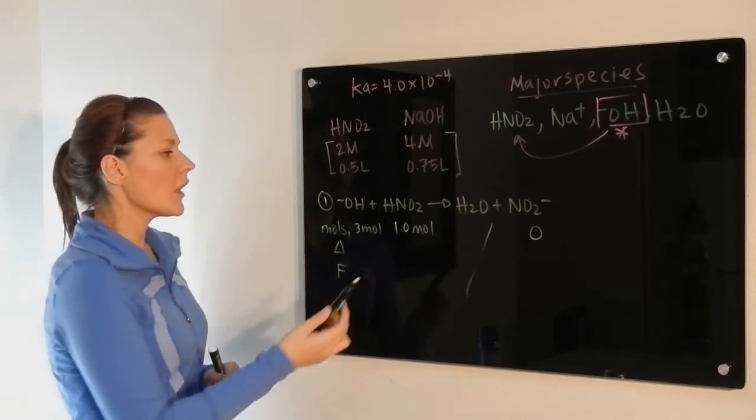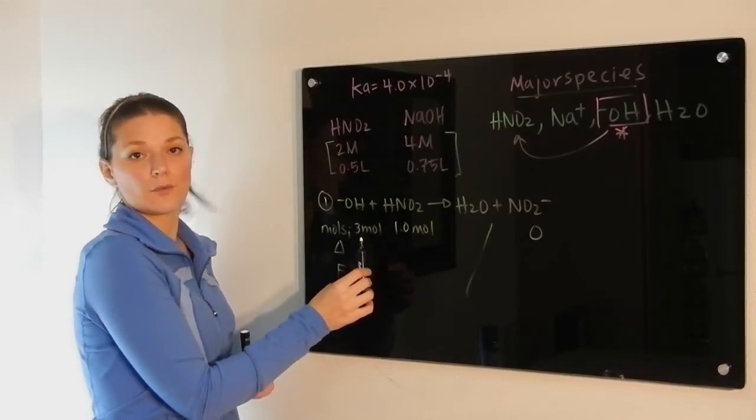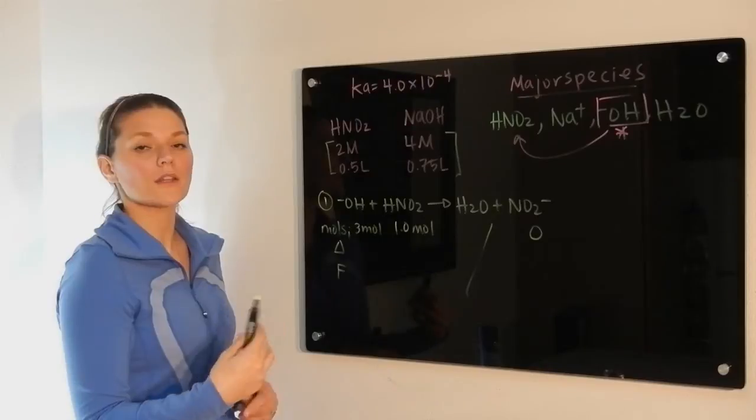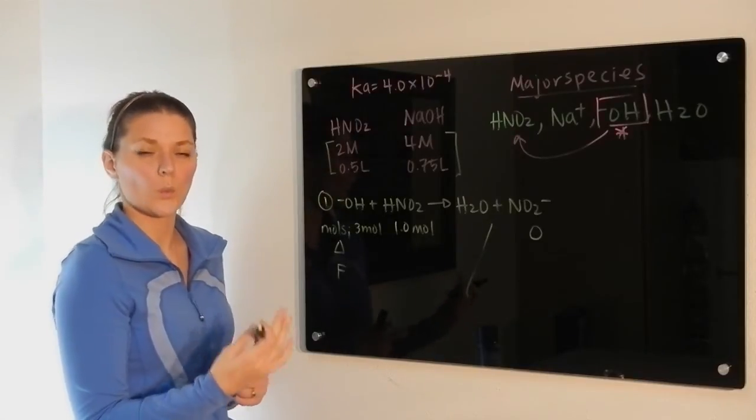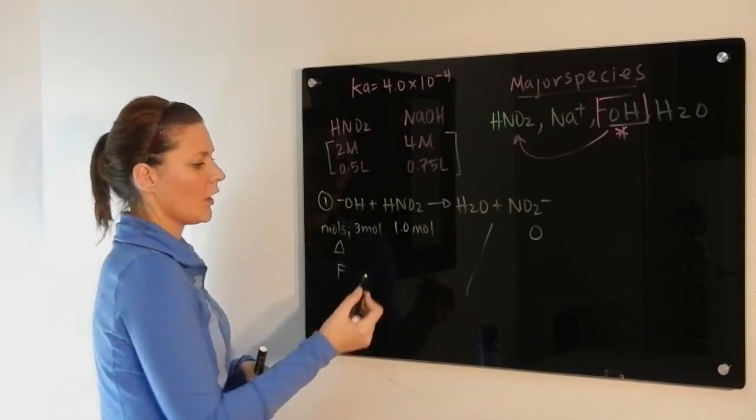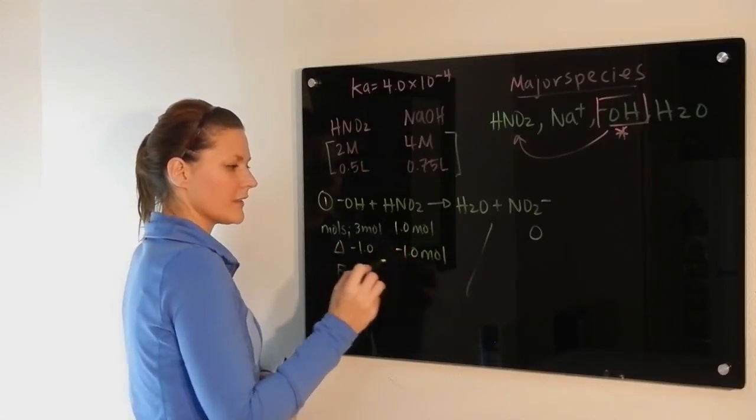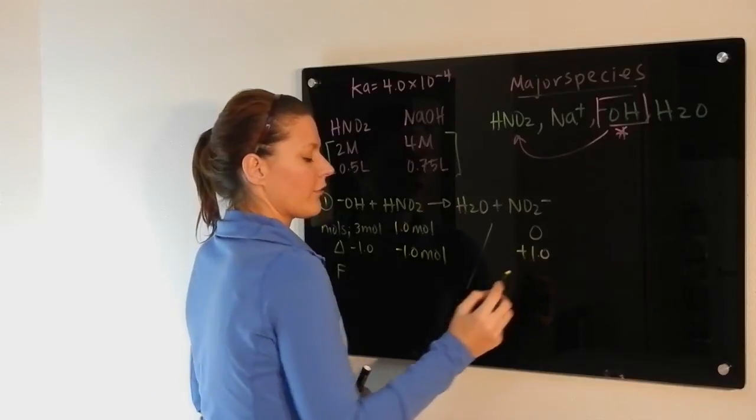So now in this case, this is no longer our limiting reactant. It's now our weak acid that's limiting. This means we've gone beyond the equivalence point, which can become important later. So because this is limiting, we're going to use this all up, use the same amount of this, and create the same amount of that.